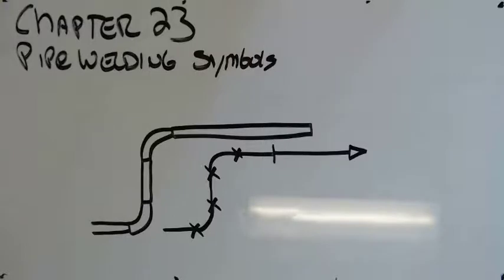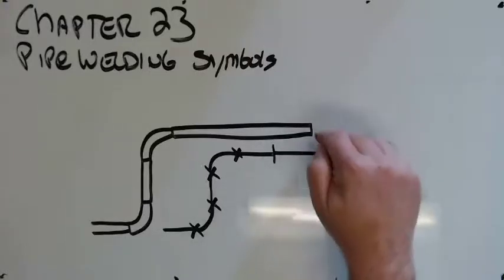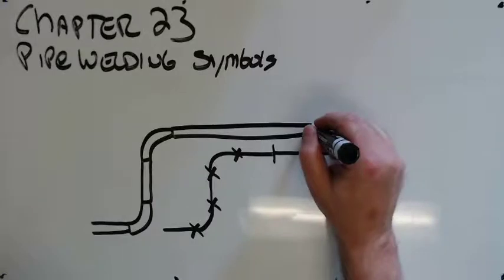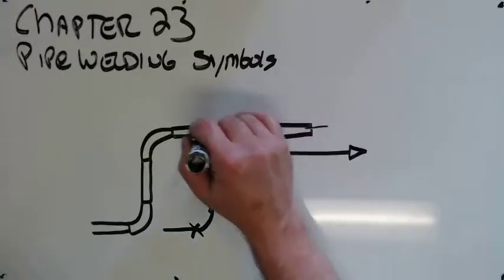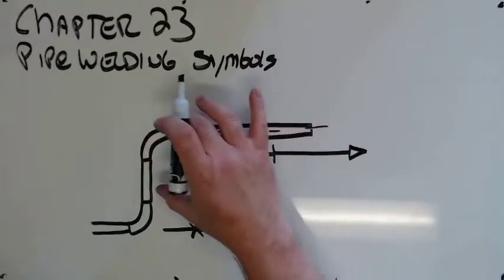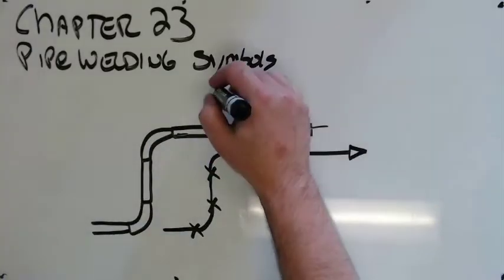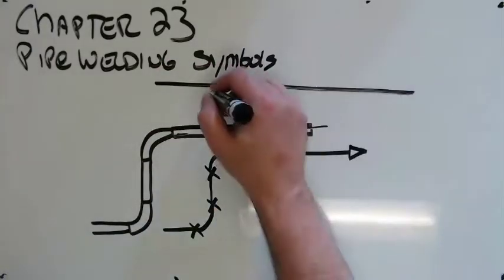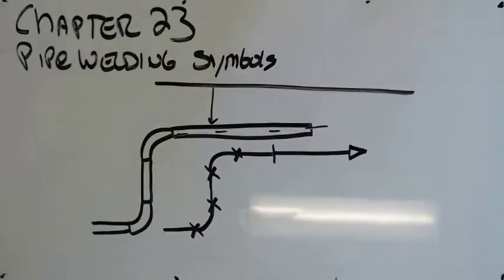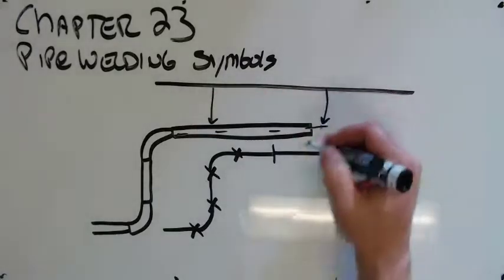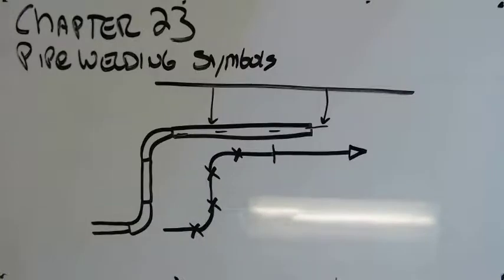The other thing too is with pipe, they always give you center line dimensions. If they were dimensioning this piece right here, they wouldn't give you a dimension. Let's say there's a wall right here. They wouldn't give you this dimension to the outside edge. They would give you this dimension to the center line for all this stuff. That's how they do it. They go always off a center line for pipe.